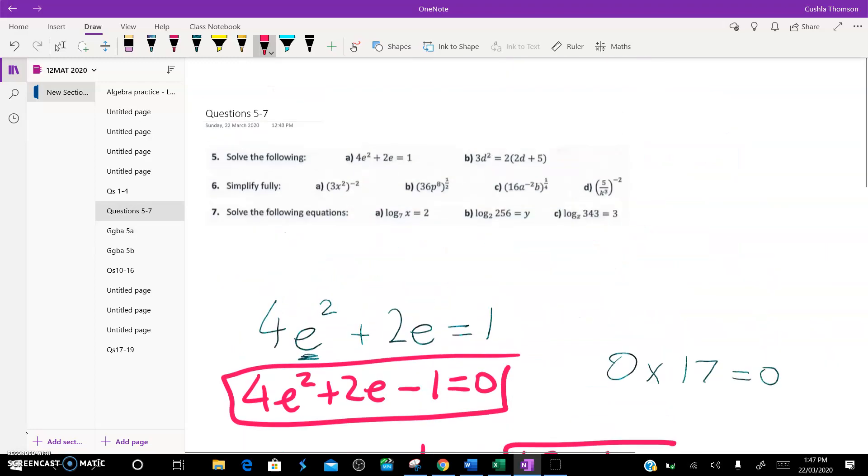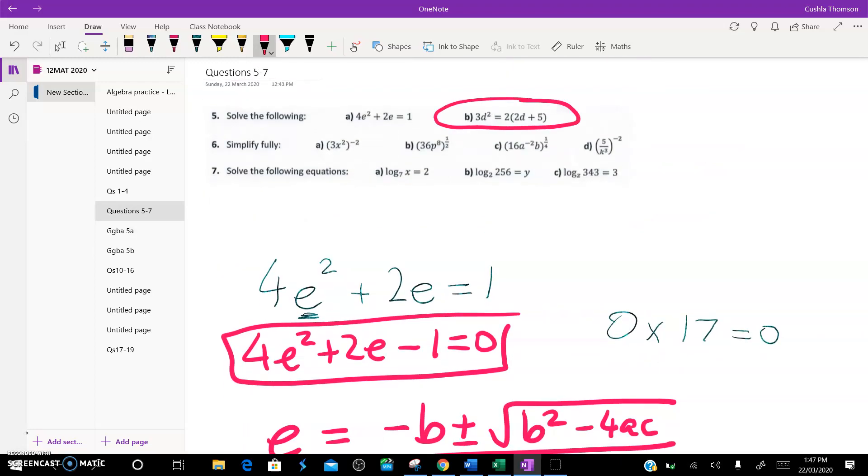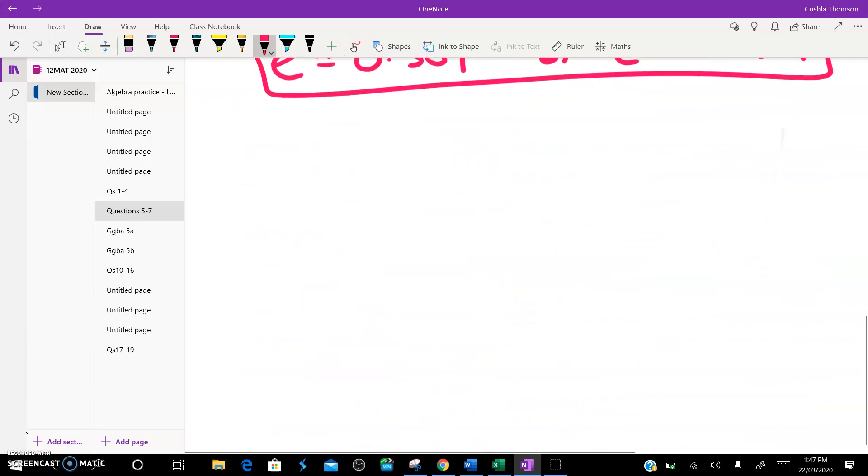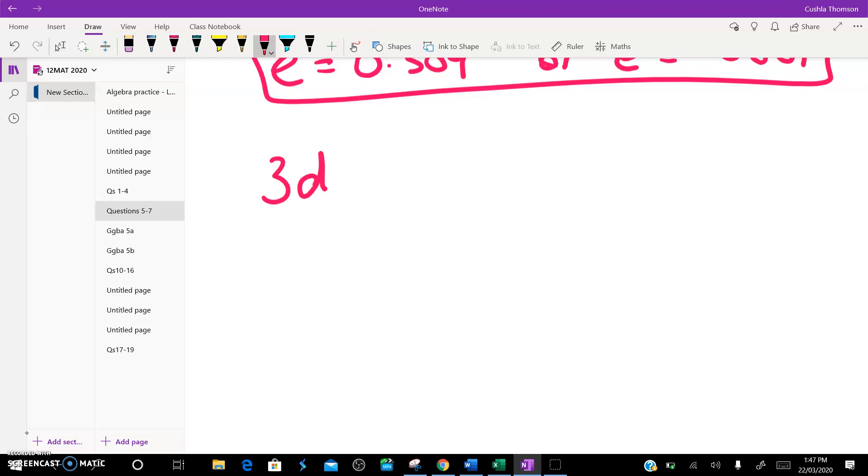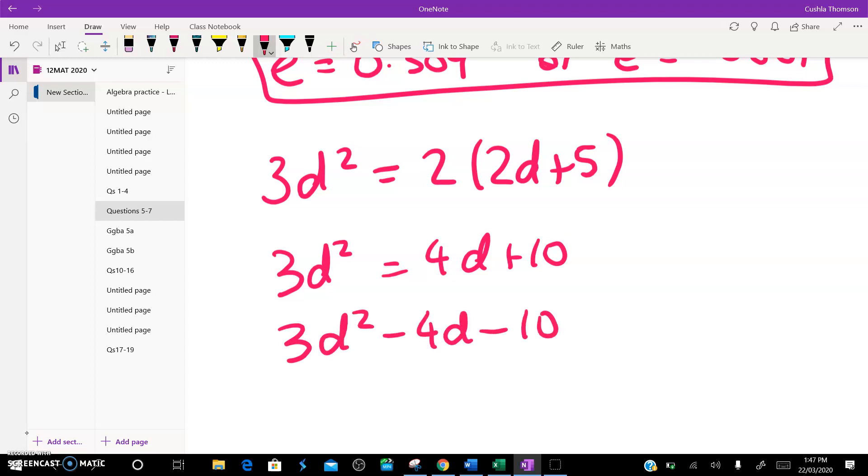Okay, on to the next one. We need to solve this one here, which is pretty similar. So let's move on to that. We've got 3d squared is equal to 2 times 2d plus 5. Expanding, I get 3d squared equals 4d plus 10. Again, 3d squared minus 4d minus 10 equals 0.